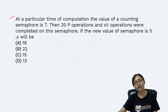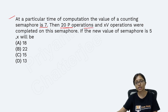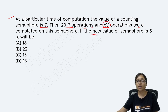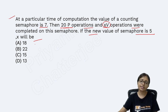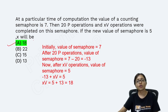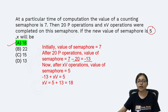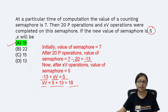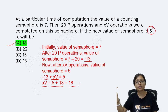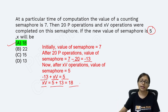Another question was from semaphore: initial semaphore value is 7, then 20 P operations and X V operations are performed, and the final semaphore value is 5. To find X: 7 minus 20 equals minus 13, and minus 13 plus X equals 5, so X equals 18. Therefore, 18 V (signal) operations were completed. The answer is 18.